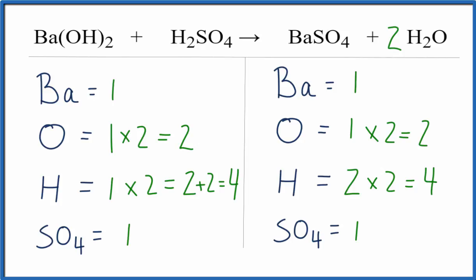When we see a polyatomic ion, like the SO4, and it's on both sides, you can count it as one thing, and then that way it doesn't get all mixed up with these other oxygens here and make things complicated for you.